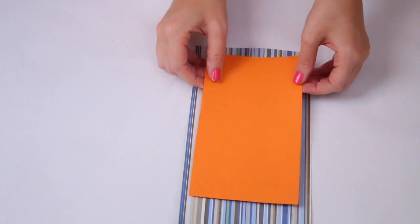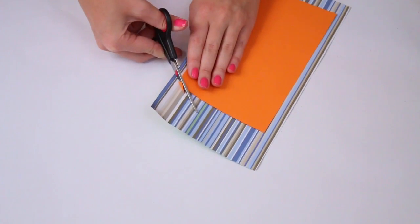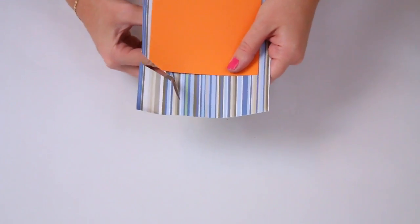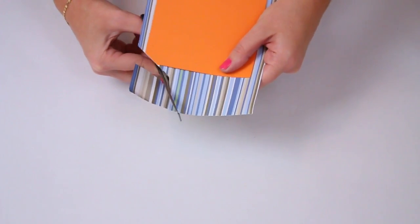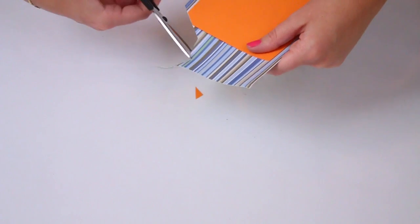So you just want to cut it at a slight angle and then have it work itself into a circle if that makes sense. It's a lot easier just to watch me do it but yeah just go ahead and do that.